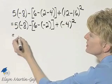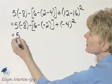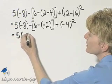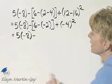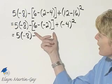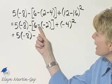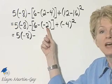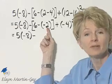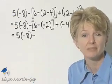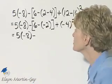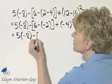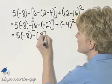And let's continue working within these sets of brackets and parentheses. Minus, now let's look at this set of brackets. I have 6 minus a negative 2. That becomes 6 plus a positive 2, or simply 6 plus 2. 6 plus 2 is 8. So I have an 8 there.